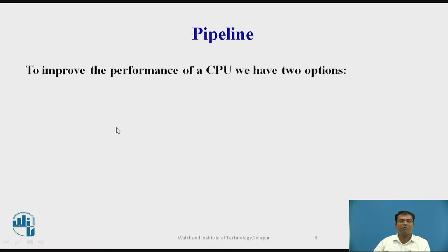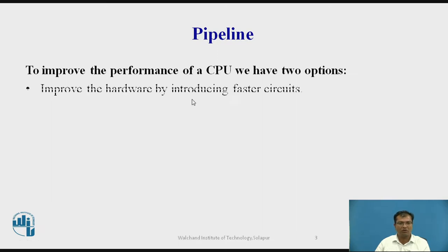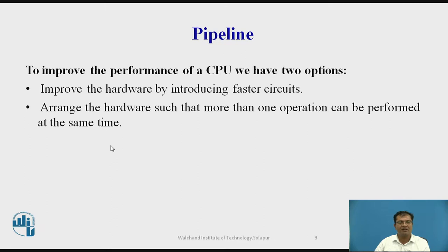To improve the performance of a central processing unit, we have two options. The first one is with the help of hardware by introducing faster circuits, which support enhancing the speed and performance of a CPU. The second option is arranging the hardware such that more than one operation can be performed at the same time.